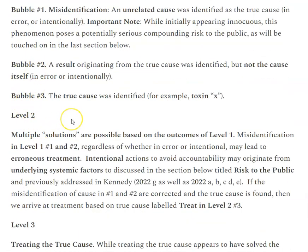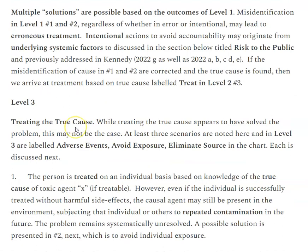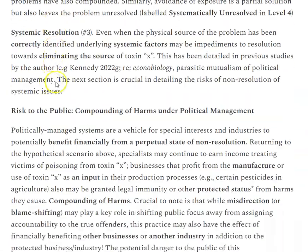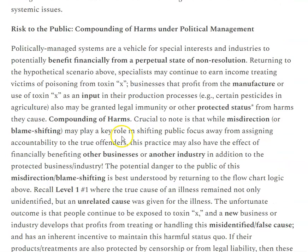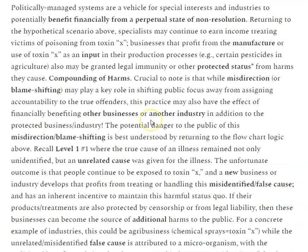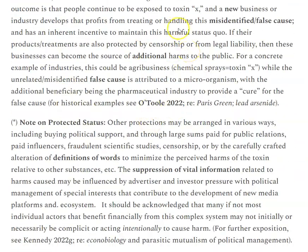We go through the causation or logic levels all the way down to level four. There is a warning here about the risk to the public: without properly unraveling causation, you can get this compounding of harms. That is really aided by the system of political management, which was discussed in the previous study on econobiology. By not properly identifying something, you can actually compound the problem and create more illness and more problems in society. That concept is emphasized throughout the text.